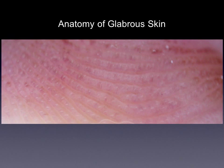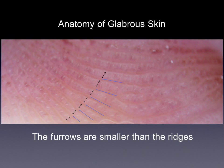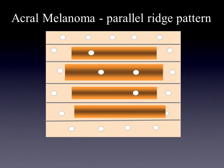So we have to remember a little bit again the anatomy of the glabrous skin. We have the ridges and in between the furrows, and it is important to know that the furrows are smaller than the ridges. This is important because one of the most important patterns of early acral melanomas is the so-called parallel ridge pattern, where you can find the pigmentation on the ridges.